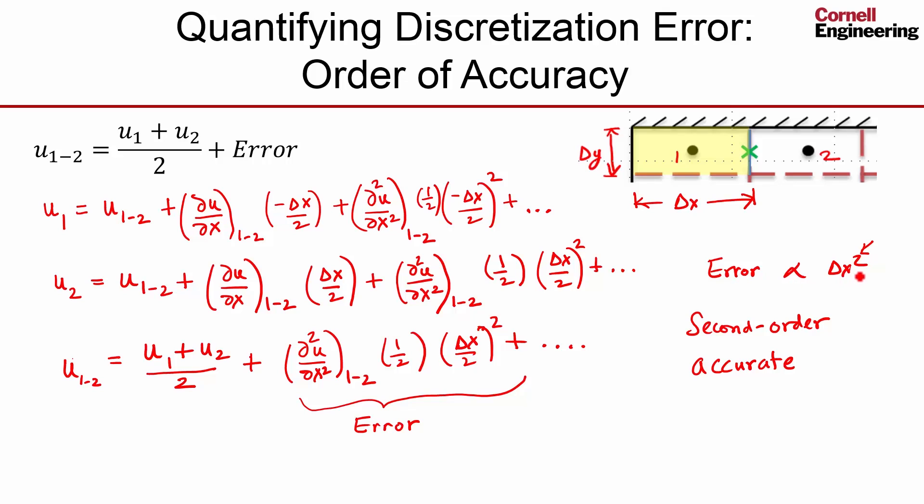In a first order, the error will be proportional to delta x, the delta x will be in the leading term in the error. If every approximation in your scheme is second order accurate, then you would say you have a fully second order accurate discretization scheme.